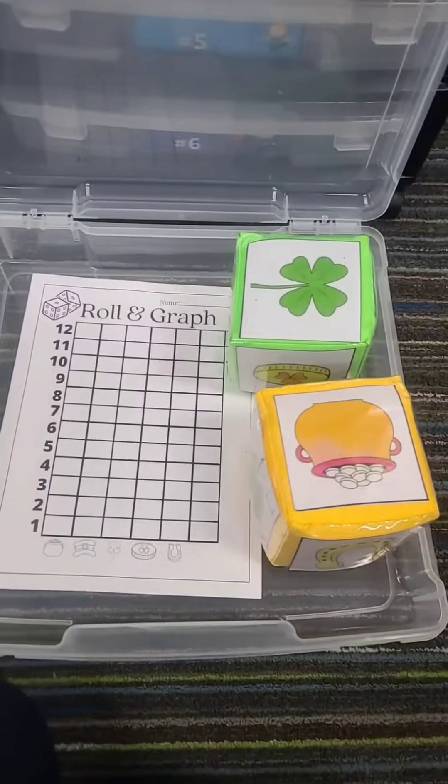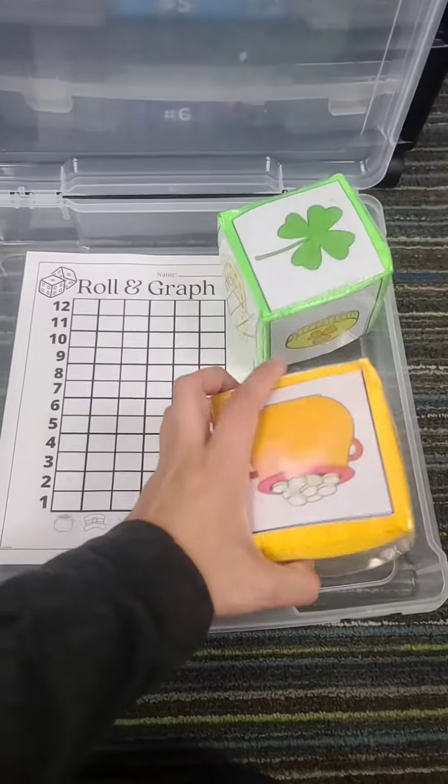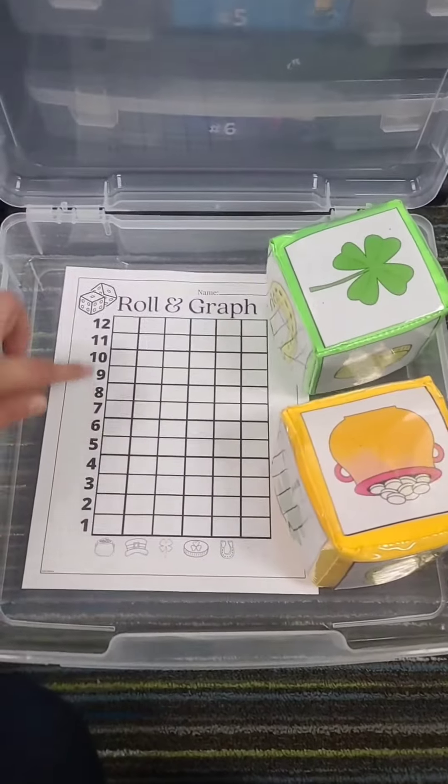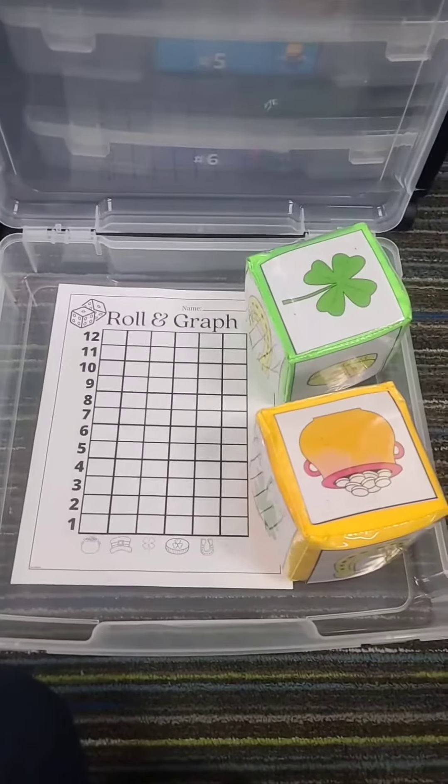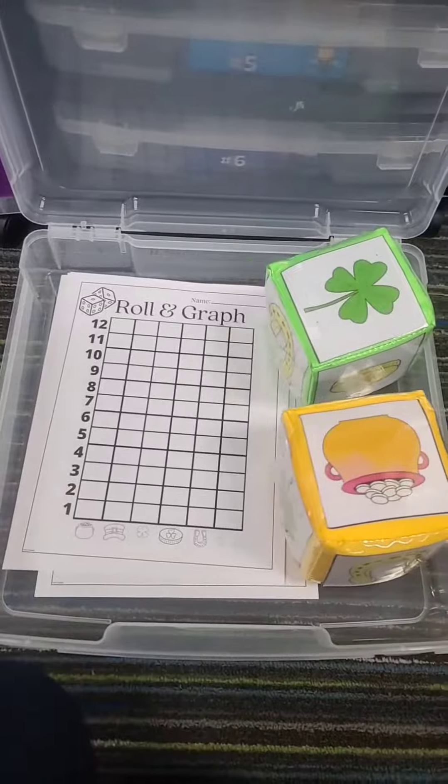Center number two: in this center, they're going to roll the die and graph. The first image that gets to 12 is the one that wins. And they have to do this twice because it's double-sided.